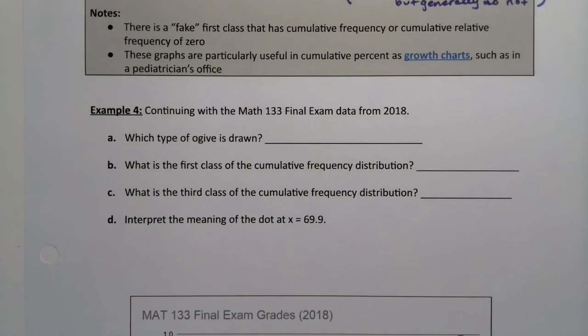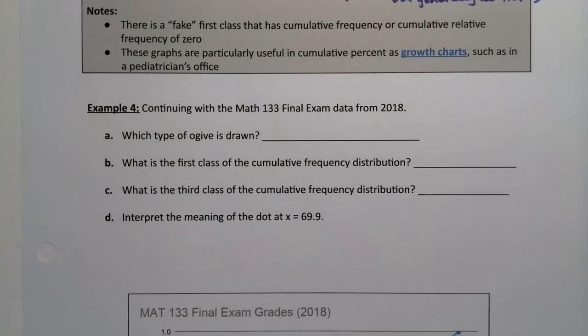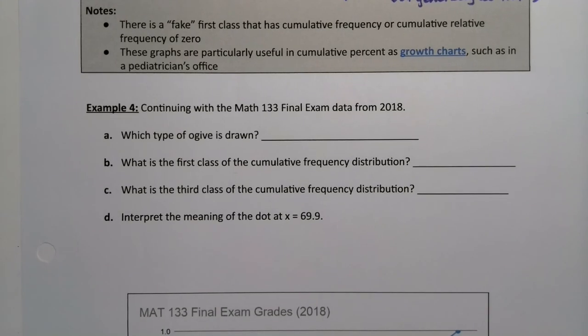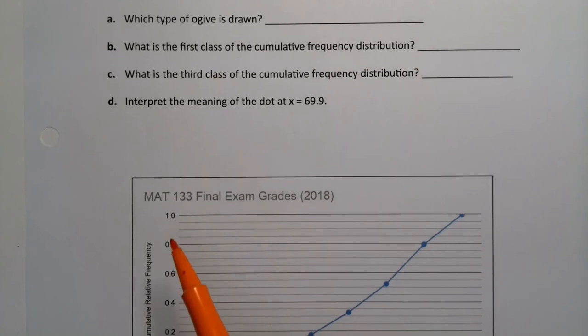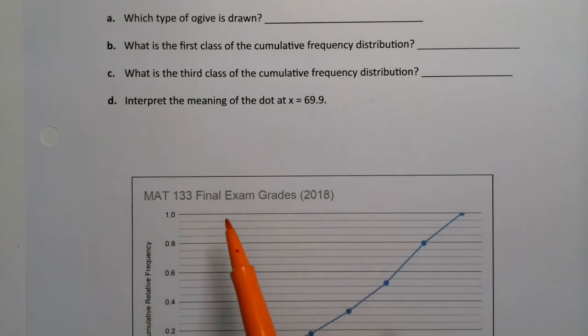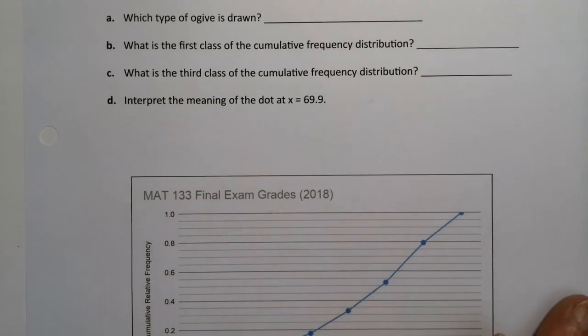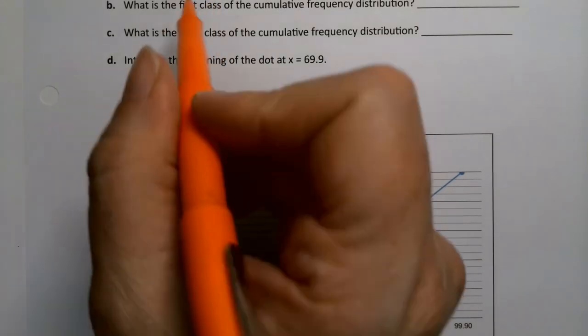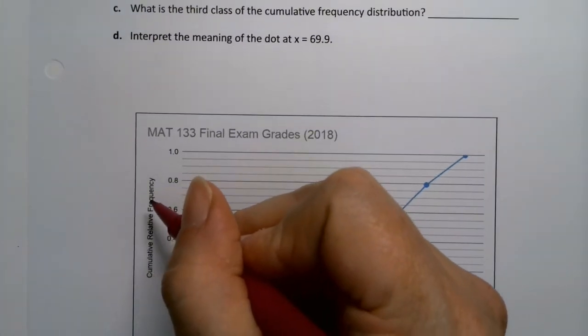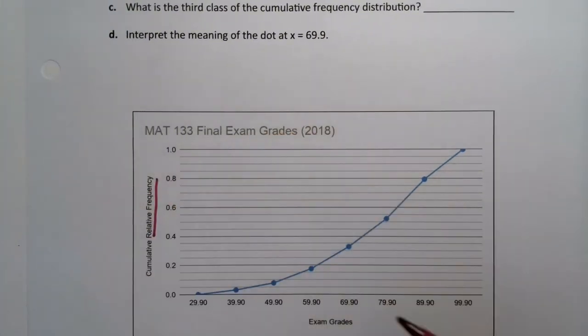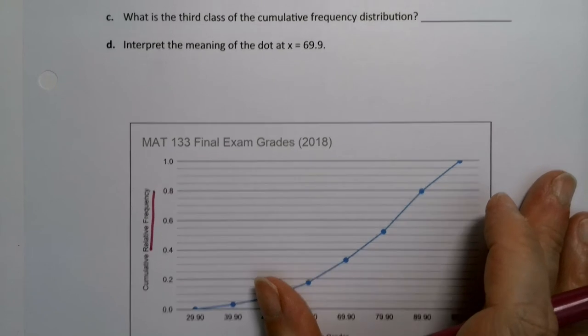All right. So now let's continue with our example because it'll make a lot more sense as usual with an example. So we have down below an ogive that is drawn for that data set, for those final exam data. Now, what type of ogive are they talking about? Well, that would mean we have to look here and it says cumulative relative frequency. So it's a relative frequency ogive.